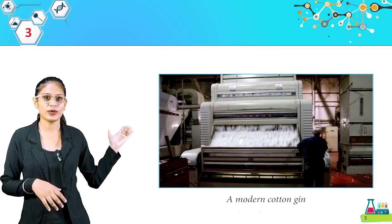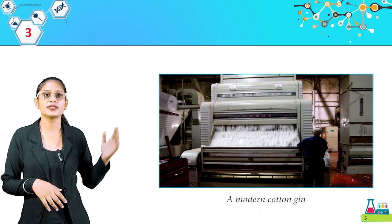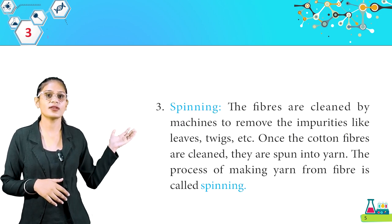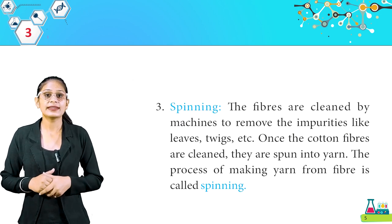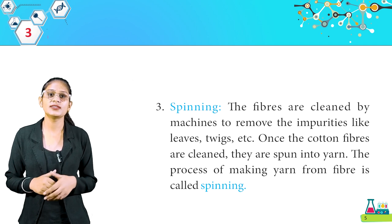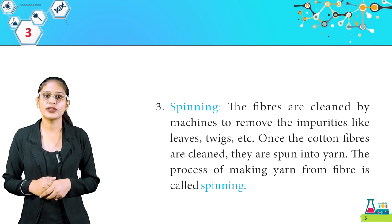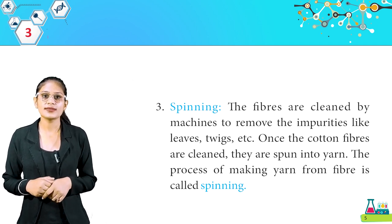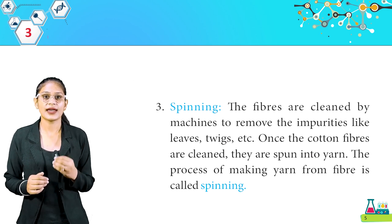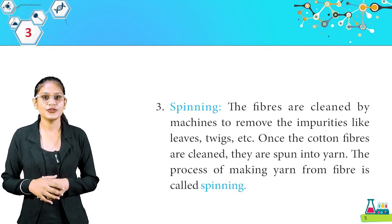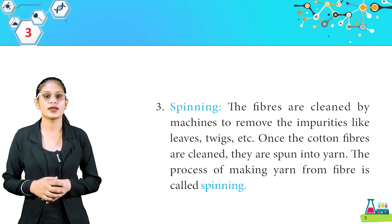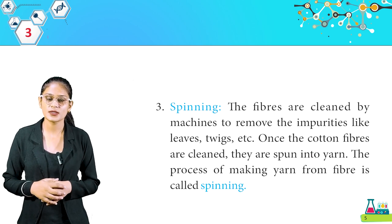Look at this picture — a modern cotton gin. The third step is spinning. The fibers are cleaned by machines to remove impurities like leaves and twigs. Once the cotton fibers are cleaned, they are spun into yarn. The process of making yarn from fiber is called spinning.